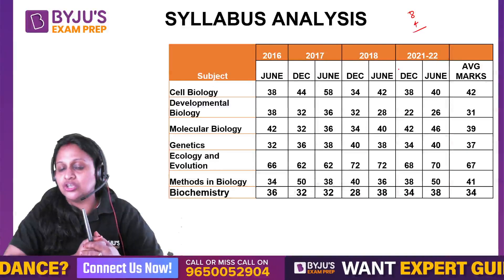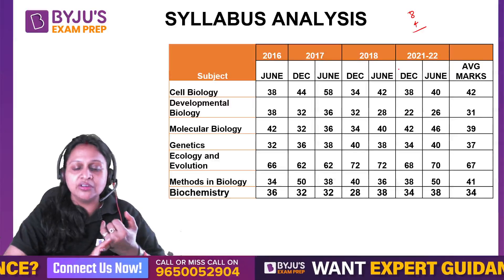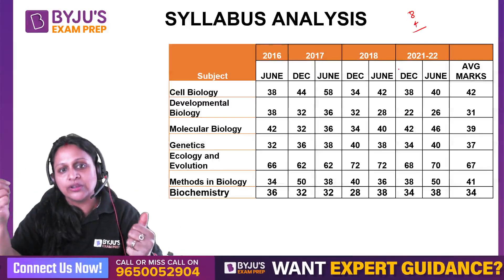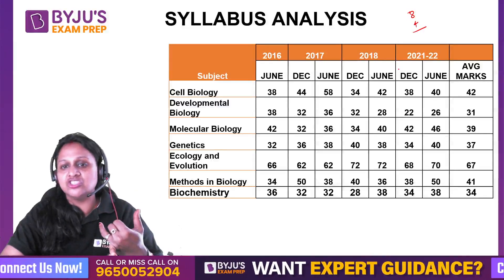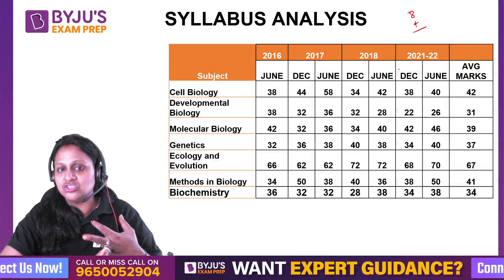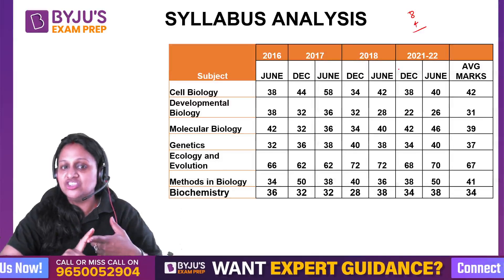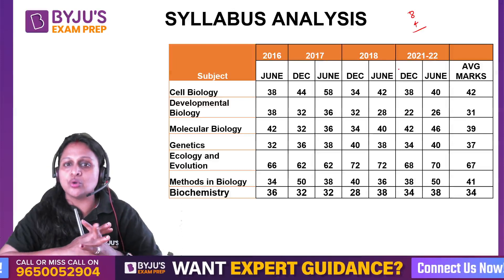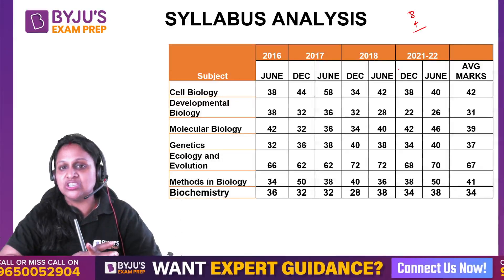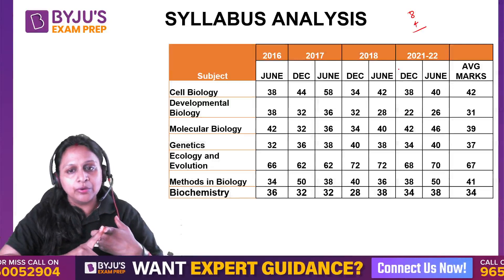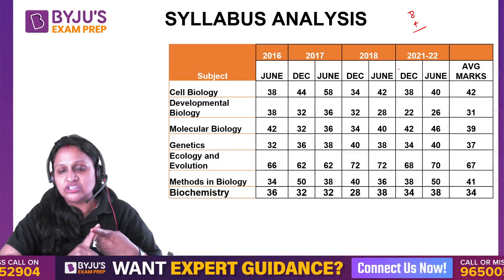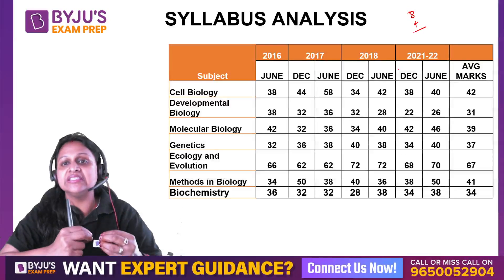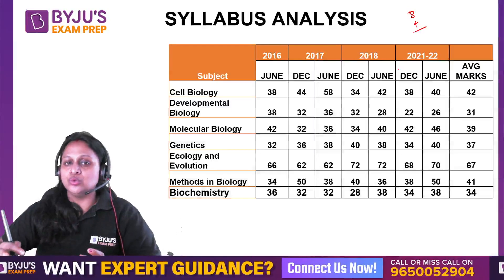Always remember, when you are doing questions you will find topics from cell biology, developmental biology, molecular biology, genetics, ecology, and biochemistry. These 7 units are marks-fetching areas with a good number of questions, and many of these are easy concept-based questions that you can answer easily, so negative marking chances are also low.